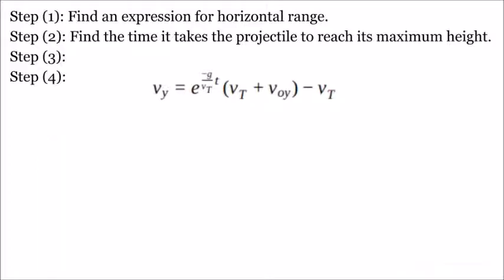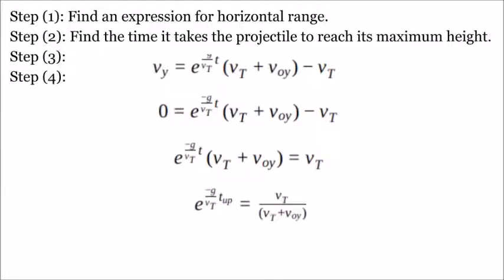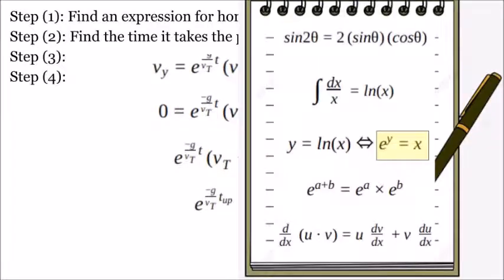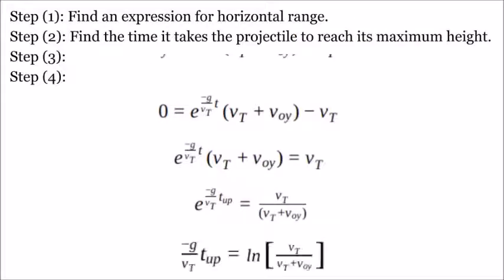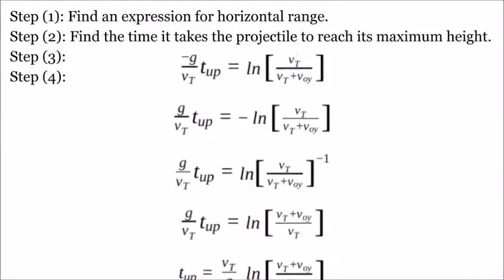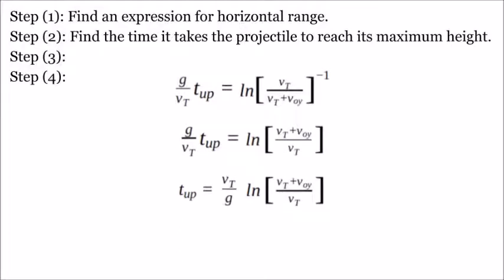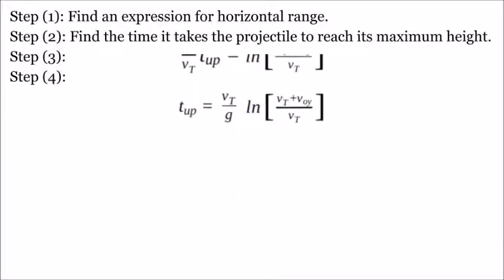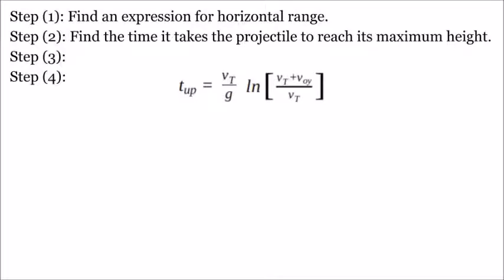Oh yeah, we're supposed to be finding the time it takes the projectile to reach that max height. Easy! Set vy equal to 0, and look back at our cheat sheet, the older version this time. If e to the y equals x, then y equals lnx, so there's our e to the y and our lnx, and a chance to be careful about negatives, which turn into reciprocals and an expression for the time it takes the projectile to reach its maximum height. t up.